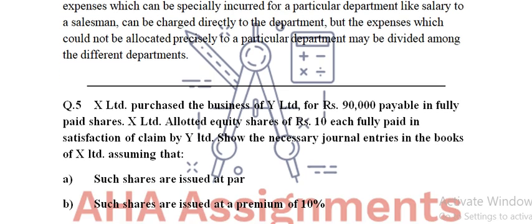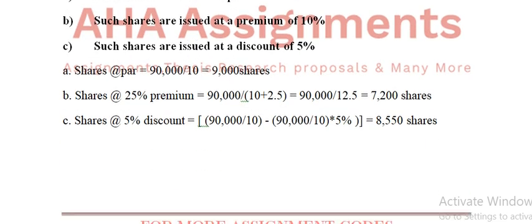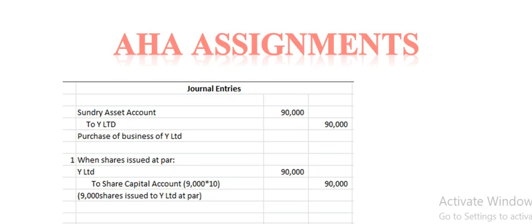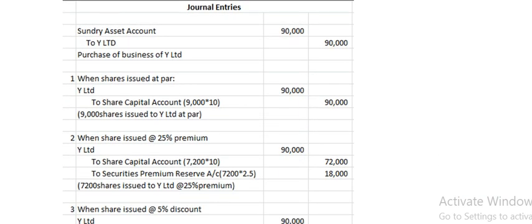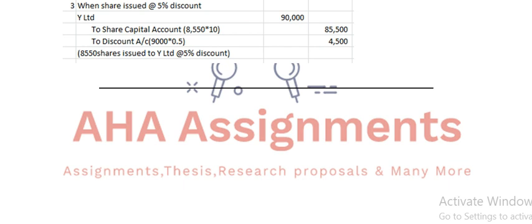Question number 5: X Limited purchased the business of XY Limited for 90,000 payable in fully paid shares. Yeh aap ki requirements hain — jo given hai woh saara kuch aap dekh sakte hain. Aur uske aap unka share calculate karke general entries kar lenge — general entries pass karenge.